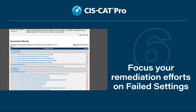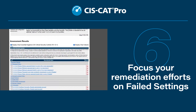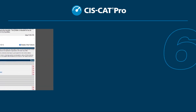Step 6: Focus your remediation efforts on failed settings. Concentrate your efforts around Implementation Group 1 of the CIS Critical Security Controls — what is called essential cyber hygiene.